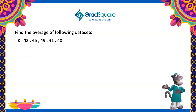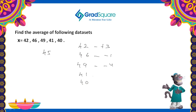Now let us find the average of the following data set: X = {42, 46, 49, 41, 40}. Using the equal distribution approach, I need to give 3 more to 42, remove 1 from 46, remove 4 from 49, give 4 to 41, and give 5 to 40 to make them all equal to 45. However, if I give 45 to all these data points, I will have 7 extra units.